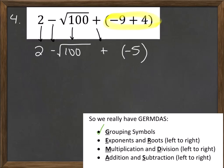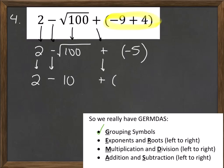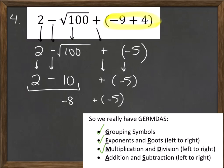We're done with grouping symbols. For exponents and roots, I see the square root of 100. The square root of 100 is 10. The minus sign, plus sign, and negative five all come down. Now I don't see any exponents, roots, multiplication, or division. So I must do addition and subtraction from left to right: 2 minus 10 is negative 8. Then negative 8 plus negative 5, typed into a calculator, gives a final answer of negative 13.